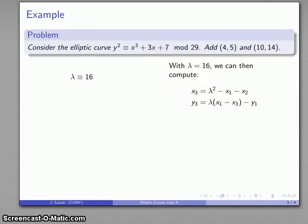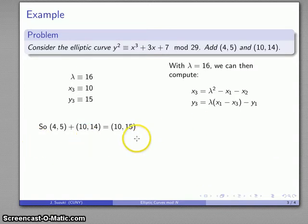And now that I know lambda, I can compute the x₃ and y₃ coordinates. So I have my formulas, I'll substitute in my values, and there's my x₃ coordinate. And so the addition of these two points, (4, 5) and (10, 14), gives us the point (10, 15).